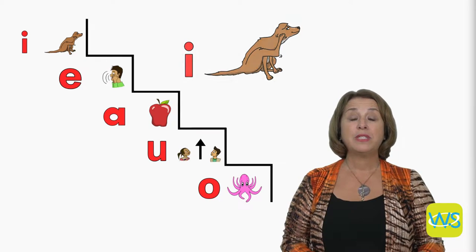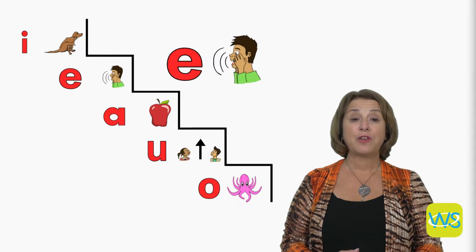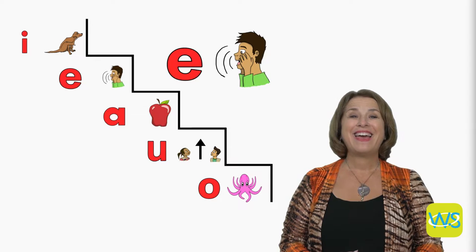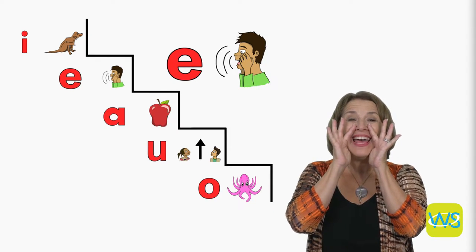Let's go down a step. We see the letter E. The short vowel sound of the letter E is EH, as in echo. Hello, hello, echo.